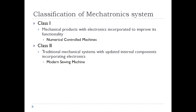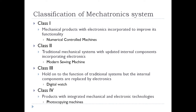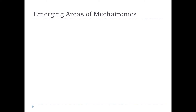Class three systems hold the function of a traditional system but all internal mechanical components are replaced by electronics; the best example is a digital watch. Class four consists of highly advanced mechatronics products designed with full integration of mechanical and electronic technologies; examples include microwave ovens and photocopying machines.